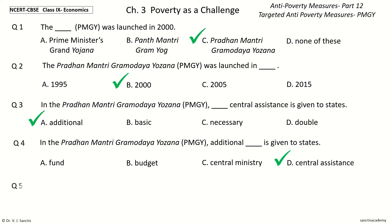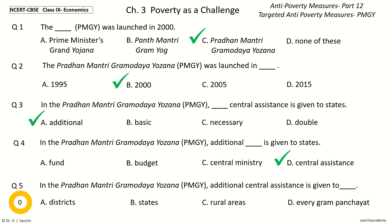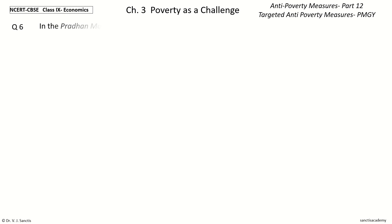Question 5: In the Pradhan Mantri Gramodaya Yojana (PMGY), Central Assistance is given to blank. The options are: Districts, States, Rural Areas, or Every Gram Panchayat. Your time to choose. And the answer is States. So, Central Assistance is given to States.